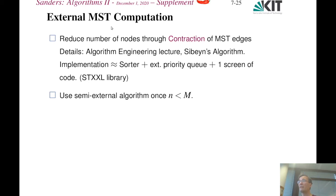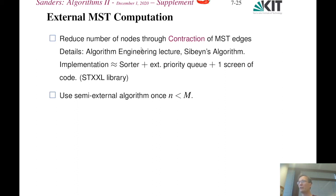MSTs can also be found with a fully external algorithm. The idea is to successively find MST edges and contract them: identify the two endpoints, removing one node and relinking its edges, until the graph is small enough in number of nodes to run the semi-external algorithm. This has also been implemented, but for details I refer to the algorithm engineering lecture.